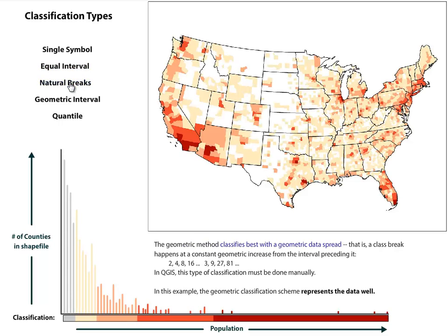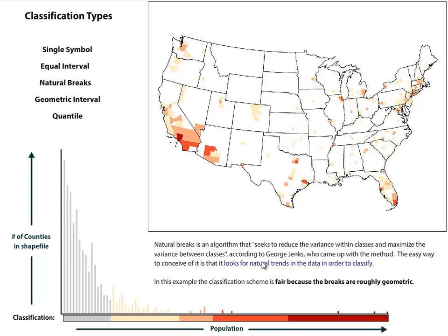Natural breaks was developed by a guy named George Jenks, so sometimes it's called Jenks — you might see it listed as the Jenks method in different GIS programs. Natural breaks is an algorithm that goes through your histogram or your data set and identifies where there should be breaks, splitting the data into classes based on what looks like good spots. In this particular case, we're still overrepresenting the unpopulated class with color. It does an okay job, though — it does better than equal interval.